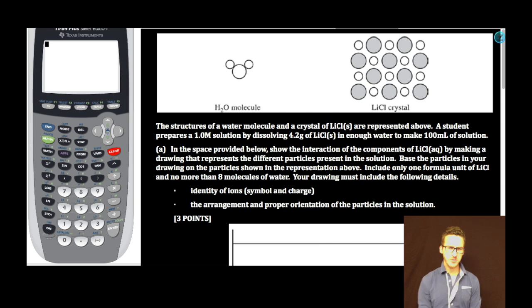Part A. In the space provided below, show the interaction of the components of lithium chloride by making a drawing that represents the different particles present in the solution. Base the particles in your drawing on the particles shown in the representation above. Include only one formula unit of lithium chloride and no more than eight molecules of water. Your drawing must include the following details: identity of ions, including symbol and charge, and the arrangement and proper orientation of the particles in the solution.